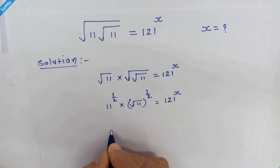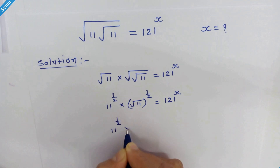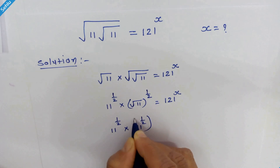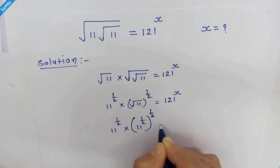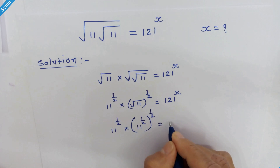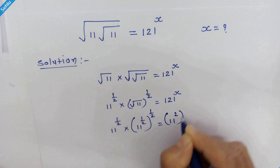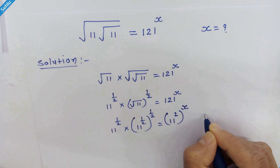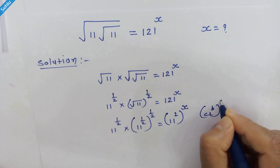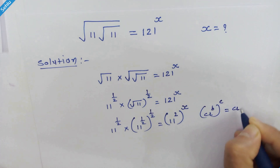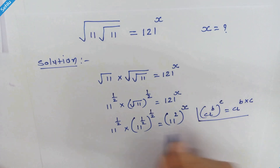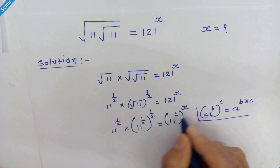Now again, 11 raised to 1 upon 2 times 11 raised to 1 upon 2, whole raised to 1 upon 2, is equal to 121, which is 11 squared, so we can write it whole raised to x. Let's remind this rule: a raised to b, whole raised to c, equals a raised to b times c. In this manner we can multiply these exponents.